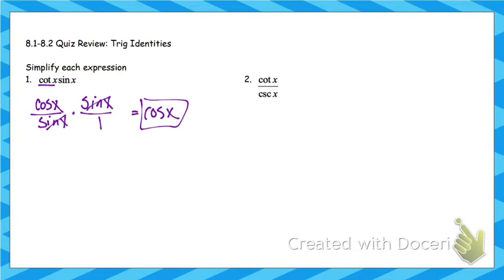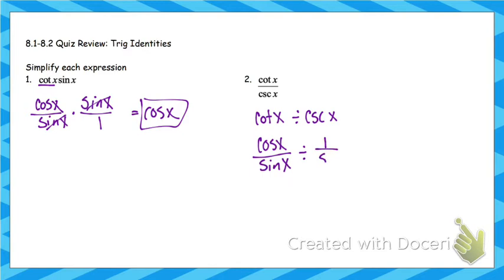On this next one, I'm going to use the same strategy. I'm going to rewrite this as cotangent x divided by cosecant x, and rewrite both of these in terms of sine and cosine. Cotangent is cosine over sine, and cosecant is 1 over sine. When we divide fractions, we keep-change-flip. My sines will cancel out, and I'm left with cosine.